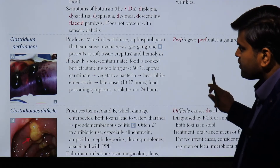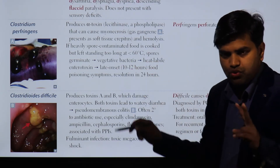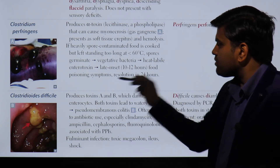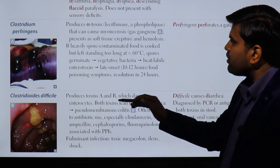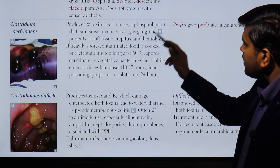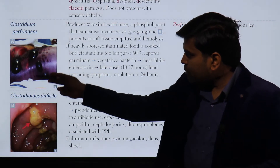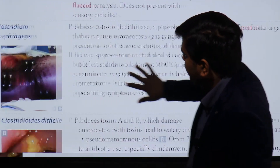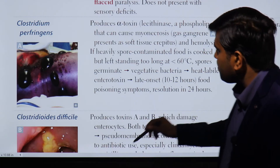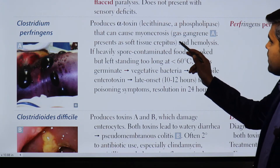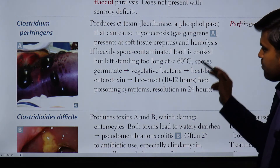Now, Clostridium perfringens and C. difficile are also gram-positive anaerobic organisms. C. perfringens has two main functions: it causes gas gangrene and it causes food poisoning. C. perfringens produces alpha toxin — lecithinase, a phospholipase — that causes myonecrosis, which is gas gangrene, as shown in the picture here.